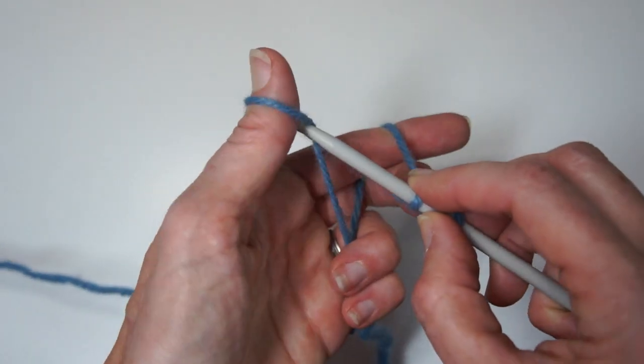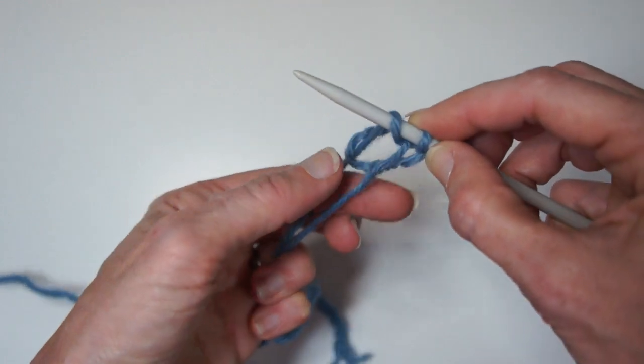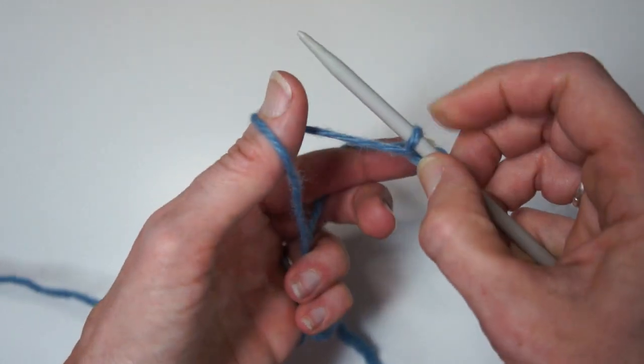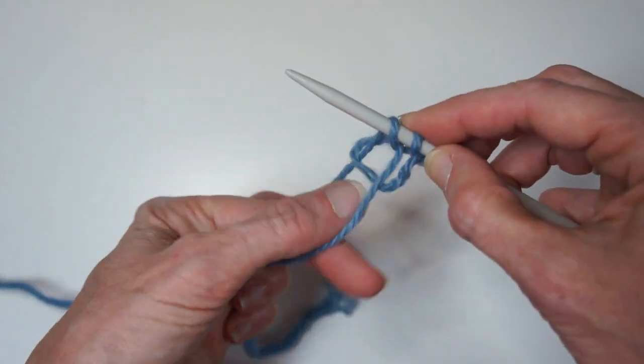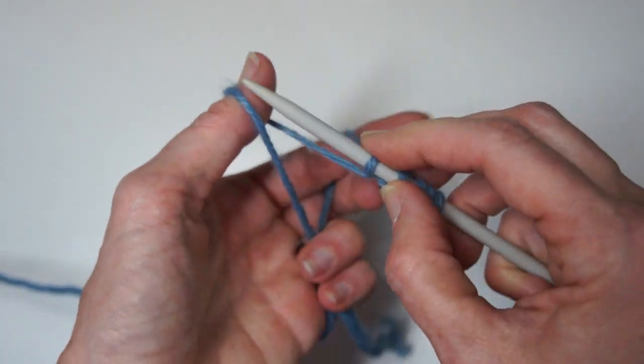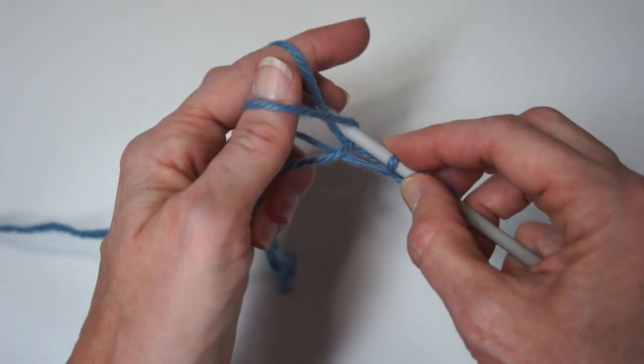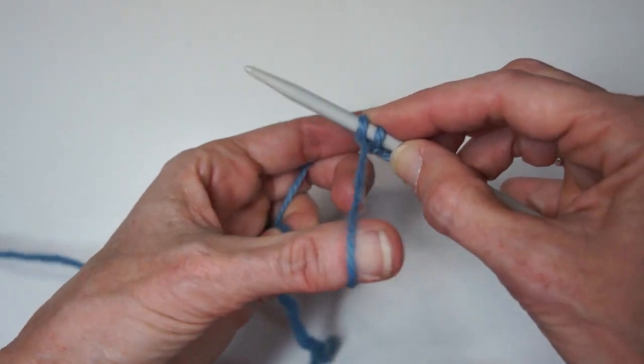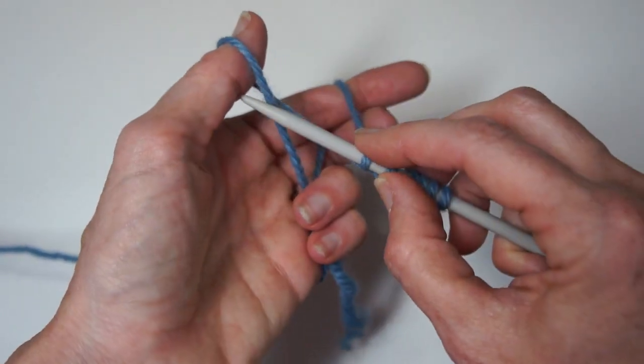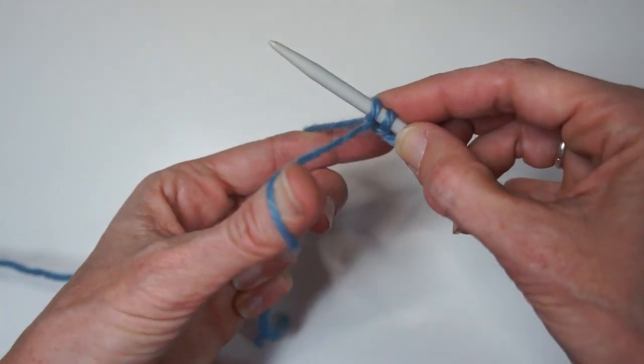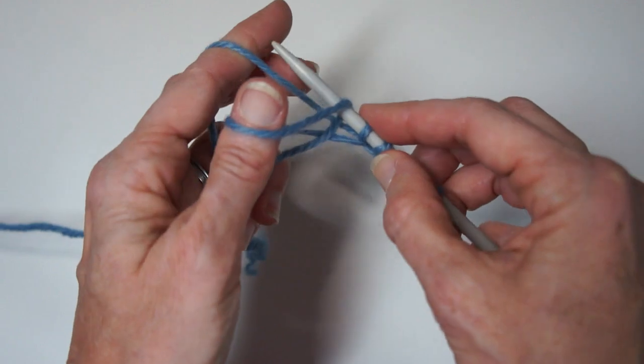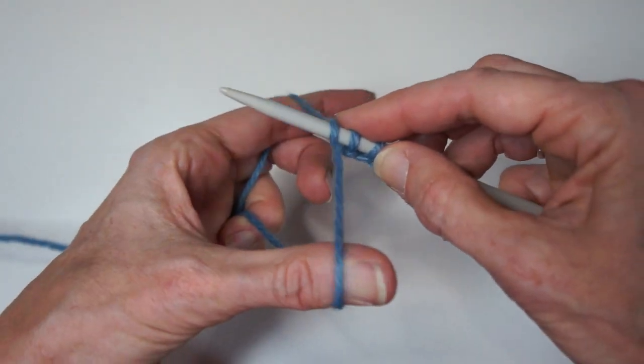I'm going to do this a few more times and then I will play it in slow motion. If you already know long tail cast on, please make sure to review my three videos on improving the look of your long tail cast on. Once you master this, you'll be ready for both my live classes, Fantastic Cast On and Bind Offs, and Decorative Cast On and Bind Offs.